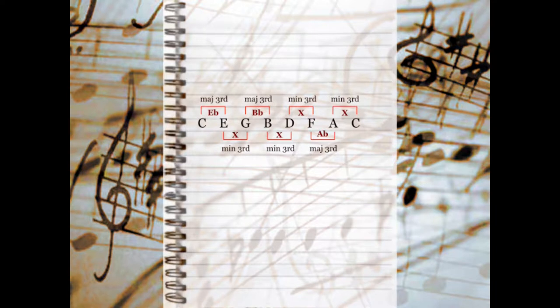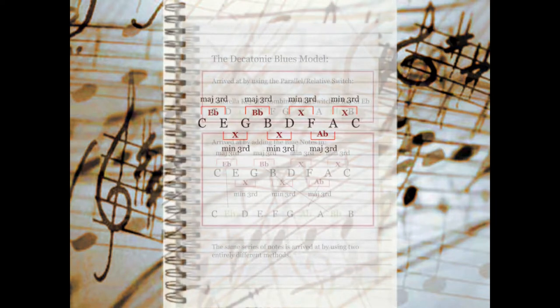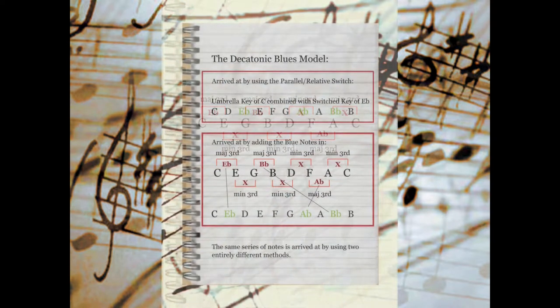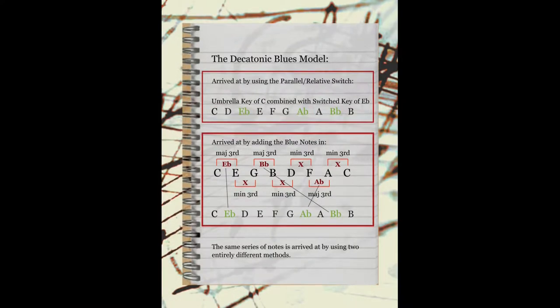Now here is what's amazing to me. If we gather all these notes together, including the blue notes, and string them together alphabetically, guess what we find? That's right — the decatonic blues model appears for us once again. This is staggering to me. The same decatonic model shows up from two completely different angles. The first way we got that model was to combine two keys. The other way, we got the very same model by adding the blue notes to the major thirds of that key.